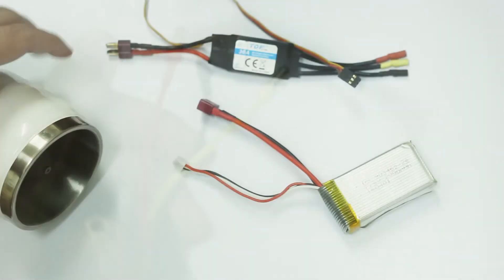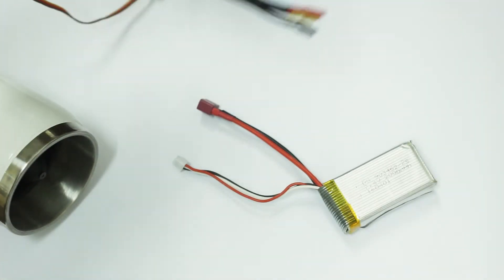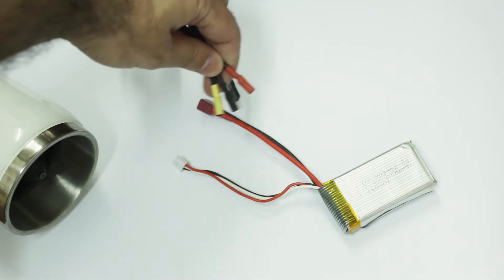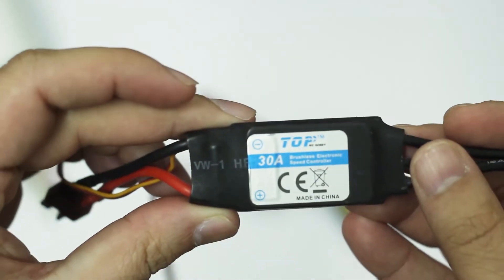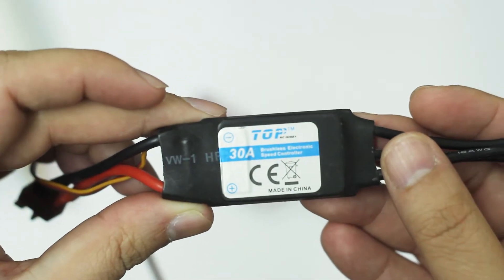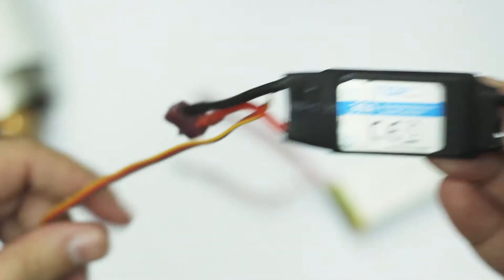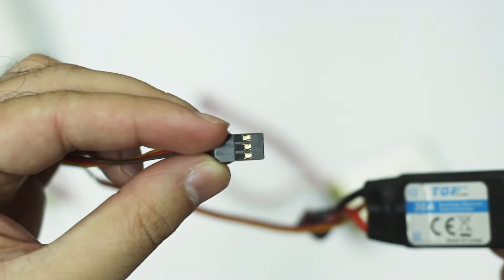This is my ESC, also known as electronic speed controller. It also has three wires and this is 30 amperes. This wire will be connected to the servo tester so it can speed up and speed down, which we will see later in this video.